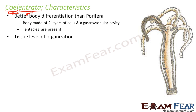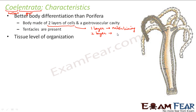Coelenterata have better body differentiation than Porifera. In Porifera there was no body differentiation at all, but here the body is made up of two layers of cells and a gastrovascular cavity. One layer forms the outer lining of the body and the other layer forms the inner lining of the body. The gastrovascular cavity is the hollow gut.